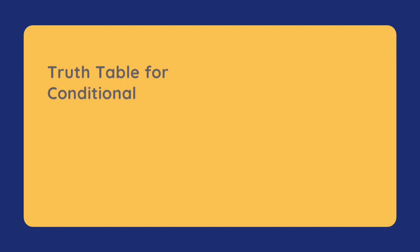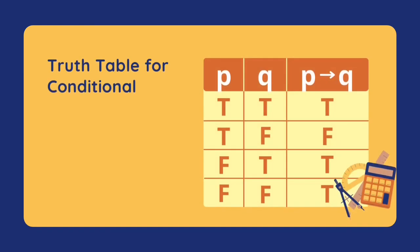This is our truth table for the conditional. Every conditional is true except when our antecedent is true and our consequent is false — in that case, our conditional is false.